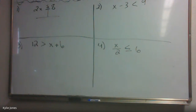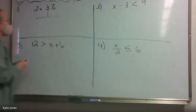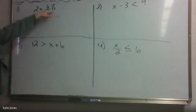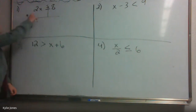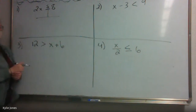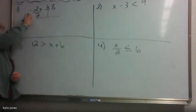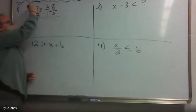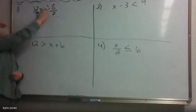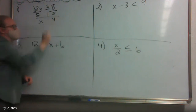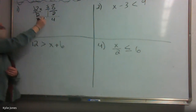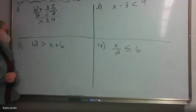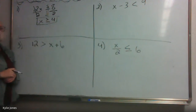Let's go over these so we can look at what else we need to do today. Number one: 2x is greater than or equal to 8. Your first step is to split it in half — one side of your inequality and the other side. This is 2 times x. What's the opposite of multiplying by 2? Divide. We need to divide by 2 on both sides. 2 divided by 2 cancels, leaving x. What is 8 divided by 2? 4. Then drop down the inequality sign — greater than or equal to 4. x is greater than or equal to 4.